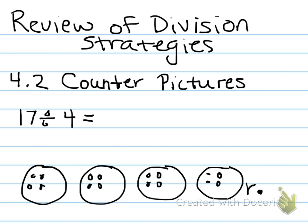My quotient would be 4, because there are 4 counters in each circle, and my remainder will be 1, because there's 1 counter outside the circles.